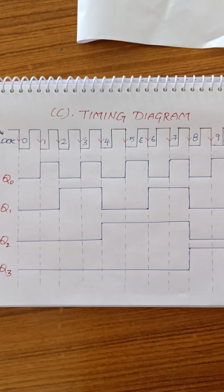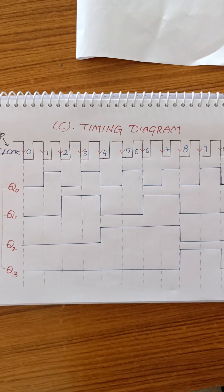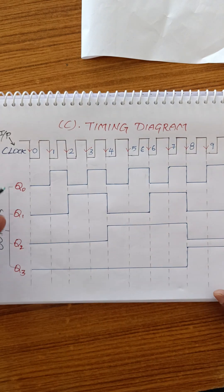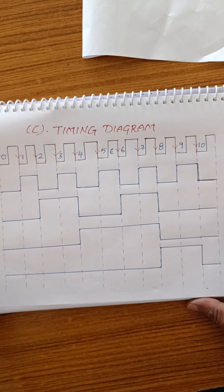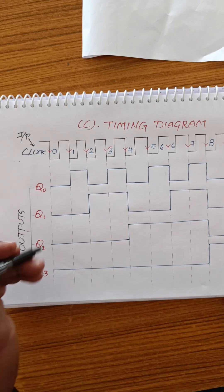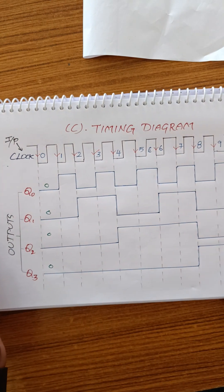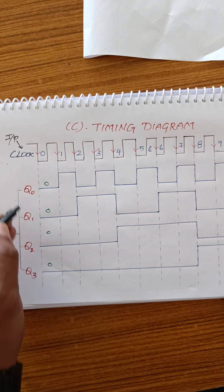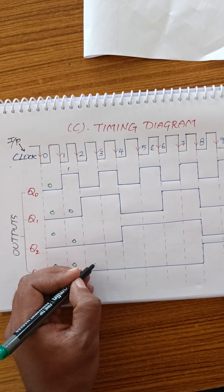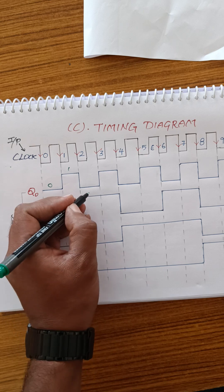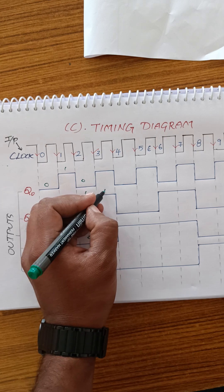In the timing diagram, when the 0th clock pulse is applied, all values are 0. For the first clock pulse, Q0 toggles to 1 (binary 0001). For the second pulse, the equivalent binary is 0010. For the third pulse the binary is 0011. Each subsequent pulse increments the binary count accordingly, from MSB to LSB.